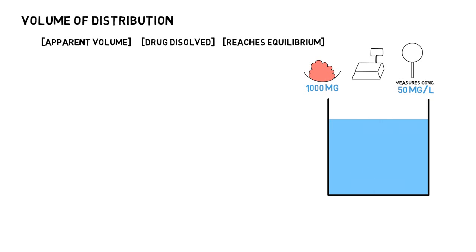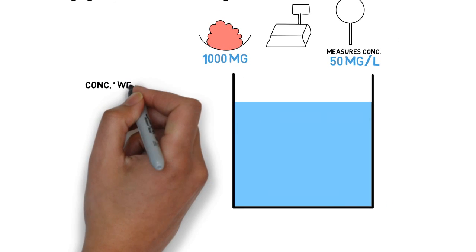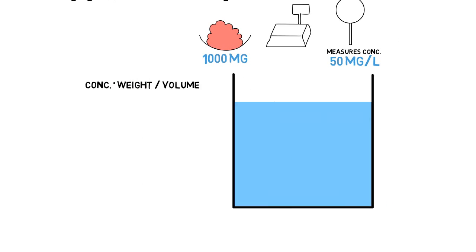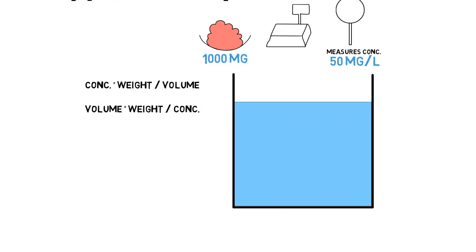Now I know that the drug which I dissolved has got completely dissolved in this volume of water in this container, so it should basically take up that space which the water took. The volume of distribution of this particular drug is going to be the volume of water here. Concentration is weight divided by volume, and rearranging gives us: volume is equal to weight divided by concentration.